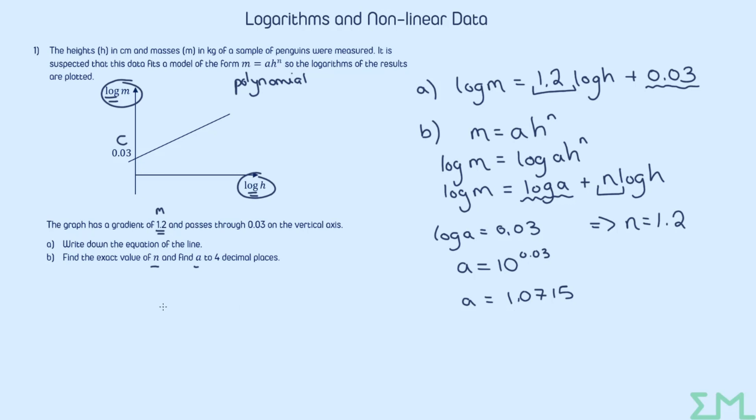Just so we can see what we've actually done here. If we rewrite out the model it basically means that the mass of a penguin, m, is equal to 1.0715 multiplied by h to the power of 1.2. So this would now be the equation that we could use to work out the mass of a penguin with any given height.